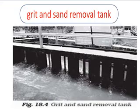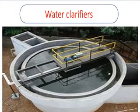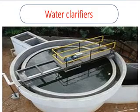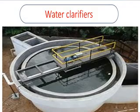The speed of the incoming wastewater is decreased to allow sand, grit, and pebbles to settle down. The water is then allowed to settle in a large tank sloped towards the middle. Solids like feces settle at the bottom and are removed with a scraper — this is the sludge. A skimmer removes the floatable solids like oil and grease. The water so cleared is now called clear water.